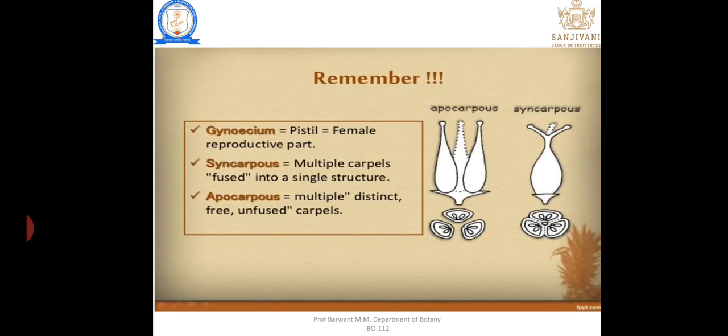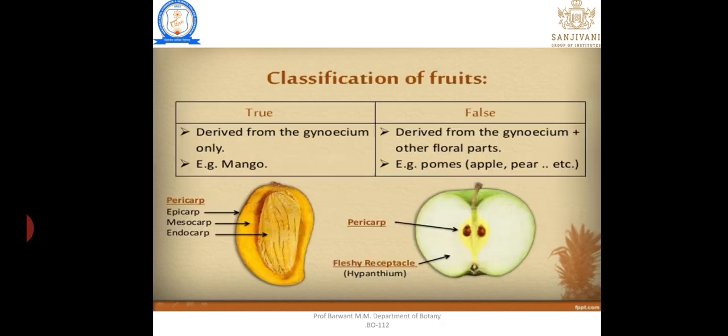Before learning the types of fruit, we need to know what gynoecium, syncarpous, and apocarpous mean. Syncarpous means multiple carpels are present but in a fused condition. Apocarpous means multiple carpels are present but in an unfused or free condition. True fruits are generally present in the gynoecium.